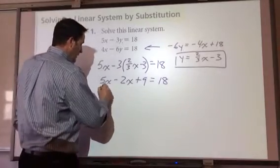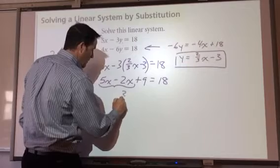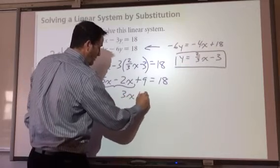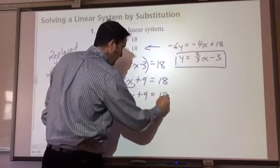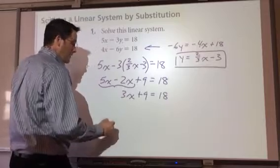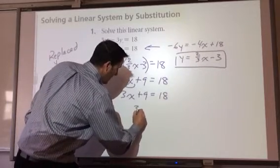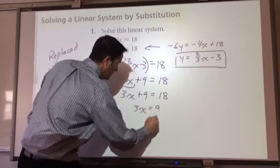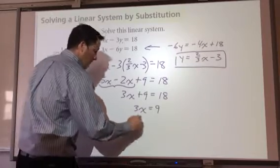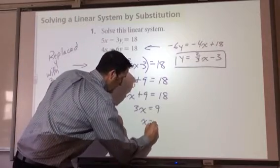Because I can simplify this. Because these combine to give me 3x. And I still have my plus 9 equal to 18. I'm going to subtract 9 from both sides. 3x equals 9. Divide by 3. x equals 3.